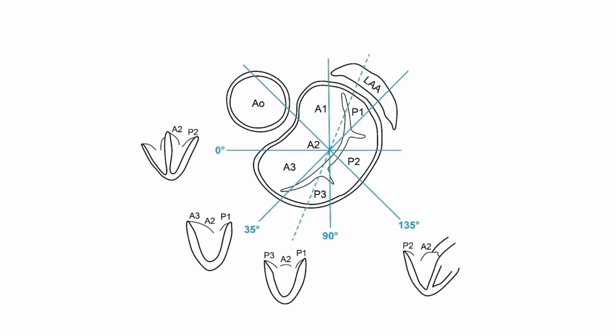Transesophageal echo provides us with multiple different views of the mitral valve and each view shows us different permutations of segments. It's important to know which segments are seen in each view so that we can interpret any abnormalities appropriately.